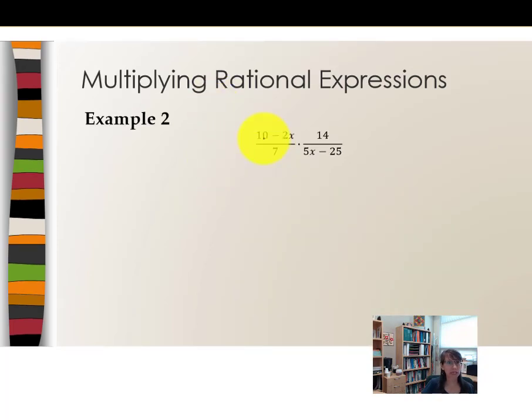Here's example 2: 10 minus 2x divided by 7, multiplied by 14 divided by 5x minus 25. I'll start with the first rational expression. In this numerator, 10 minus 2x, it looks like we have a greatest common factor of 2, leaving 5 minus x. The denominator, 7, is a prime number so there's no more factoring to do. Multiplied by our other rational expression.